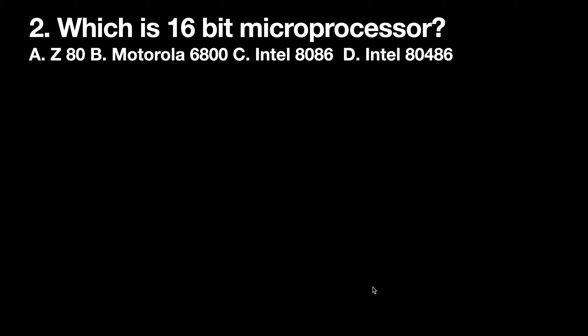Moving on to the next question: which is a 16-bit microprocessor? Option A: Zilog Z80, Option B: Motorola 6800, Option C: Intel 8086, Option D: Intel 80486. Think about it and answer.